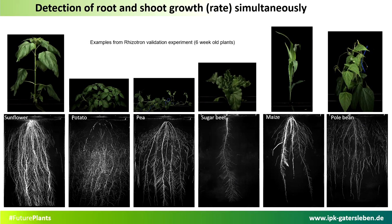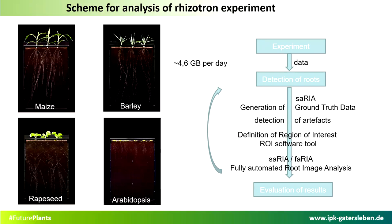Let me show our scheme for analyzing risotron experiments. After data acquisition — approximately 4.6 gigabytes per day — we have the root pictures. We use the Saria software to generate ground truth data, required to detect and exclude artifacts. We then define the region of interest using our self-developed ROI software tool, and finally apply fully automated root image analysis, so-called Faria. If required, we can go back and generate more ground truth data to optimize the system.